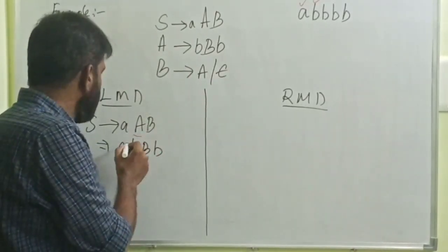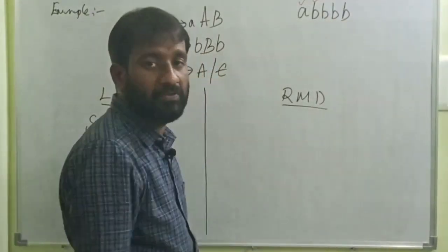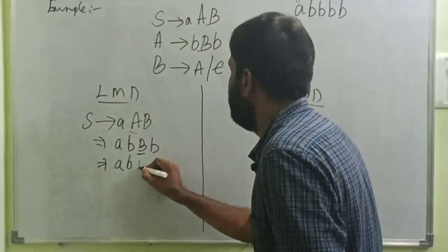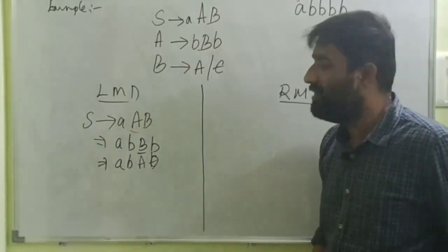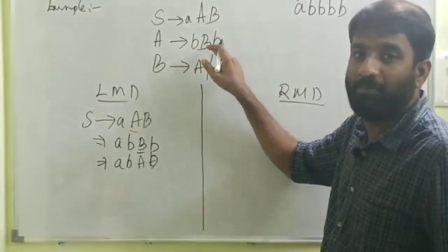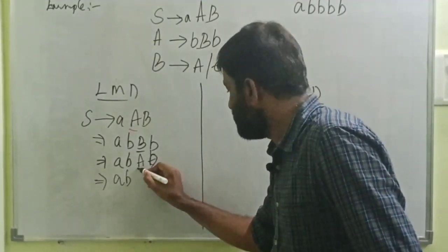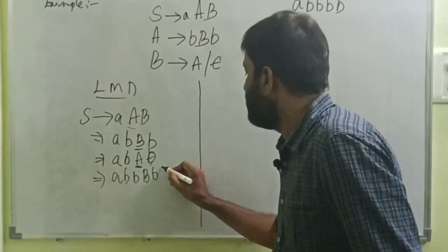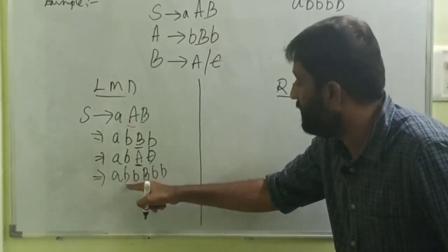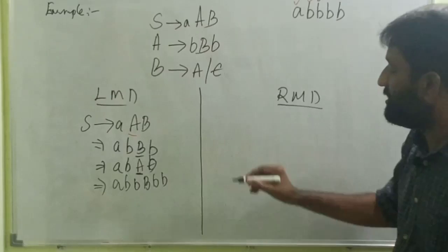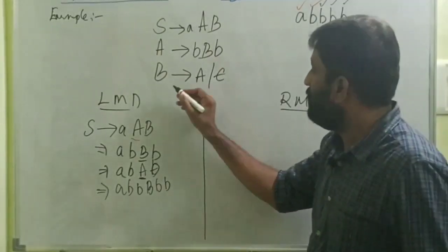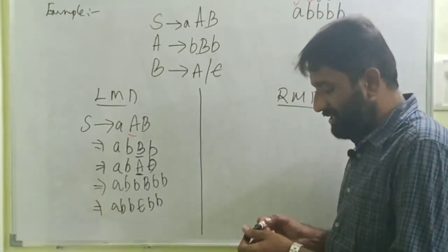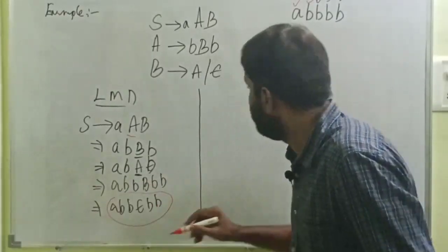We can replace B with A or epsilon. If we replace with epsilon the string becomes 'ab epsilon B' which gives only 'abb', but we are expecting 'abbbb'. So better replace B with A. Now A is replaced with bB, giving 'abbBB'. Then the leftmost B is replaced with A, then A with bB, giving 'abbbB'. Finally the last B is replaced with epsilon. The derived string is 'abbbb', which matches the working string. This derivation process is leftmost derivation.